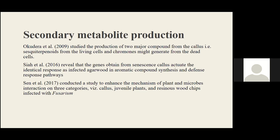Alternative methods for production of secondary metabolites are needed to meet the demand for unique fragrances. In 2009, it was studied that the two major compounds obtained from callus are sesqui-terpenoids from living cells, while chromones may generate from dead cells. A study was conducted to enhance understanding of plant-microbe interactions, examining callus from juvenile plants and wood chips infected with Fusarium species.